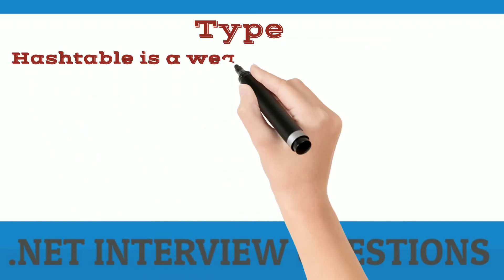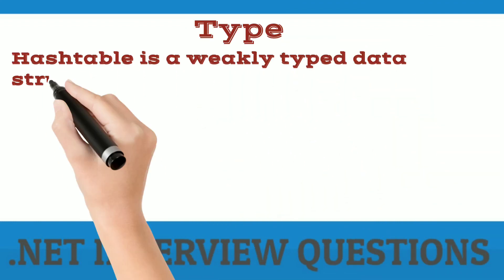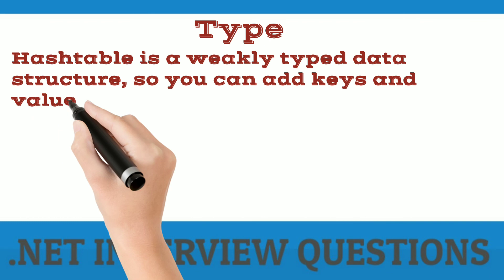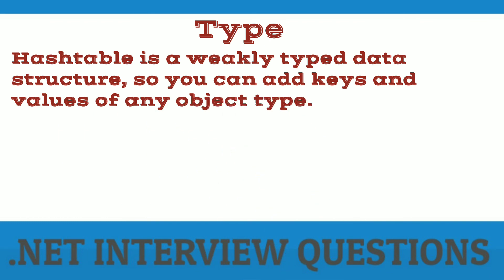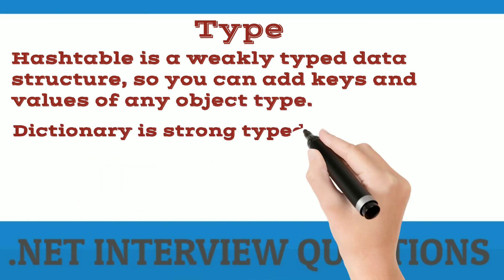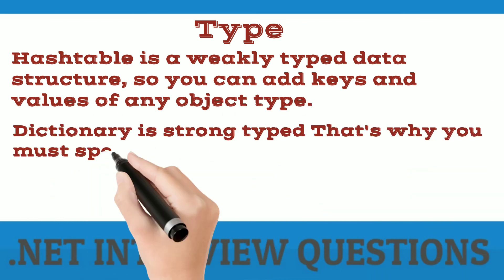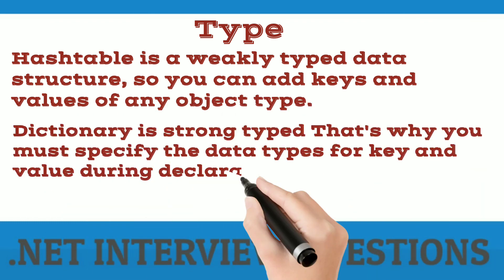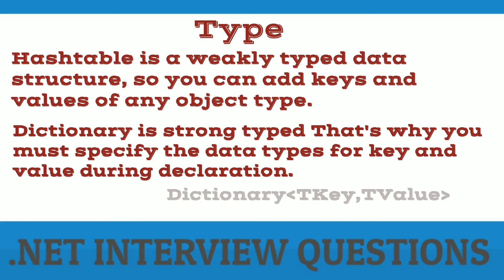Hash table is a weakly typed data structure, so you can add keys and values of any object type. But dictionary is strongly typed, which is why you must specify the data types for key and value during declaration.